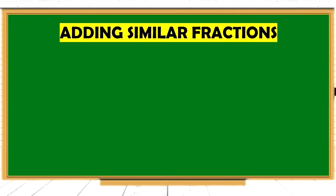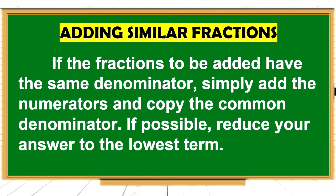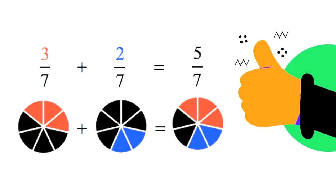In adding similar fractions, if the fractions to be added have the same denominator, simply add the numerators and copy the common denominator. If possible, reduce your answer to the lowest term. Let us consider the sample problem: 3 over 7 plus 2 over 7. We copy the common denominator of 7 and add the numerators 3 plus 2, which gives us 5 over 7.